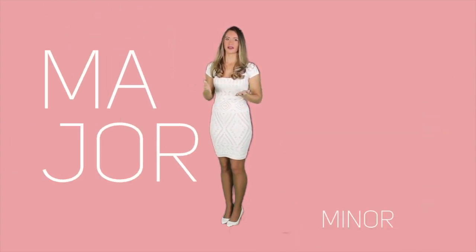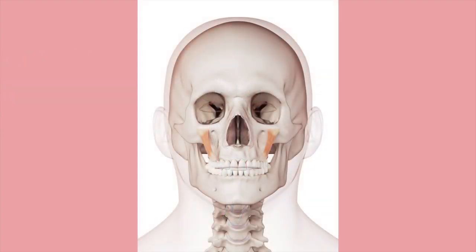Next, let's look at the zygomatic muscle. There are two types, being the major and minor. They arise from the zygomatic arch, reaching to the corner of the mouth, and their contraction causes a stretching of the upper mouth, giving the expressions of smiling and laughing.